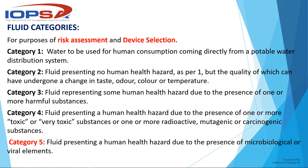Category three is fluid presenting some human health hazard due to the presence of one or more harmful substances. Category four is fluid presenting a health hazard due to the presence of toxic or very toxic substances, like radioactive, mutagenic, or carcinogenic substances - most medical installations fall here. Category five is the worst, where fluid presents a human health hazard due to microbiological or viral elements.